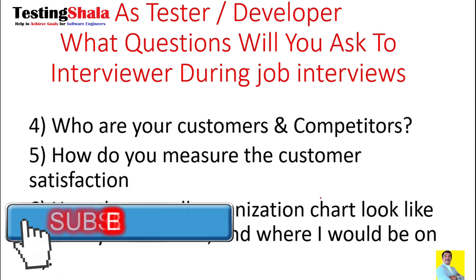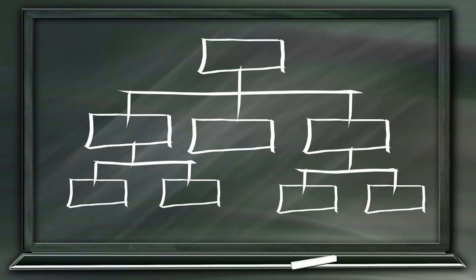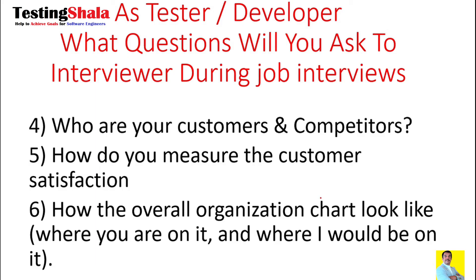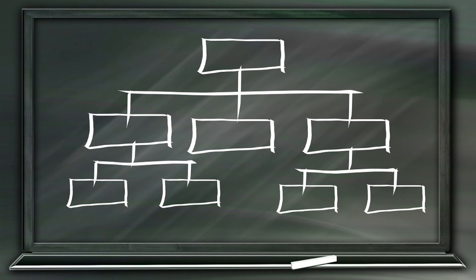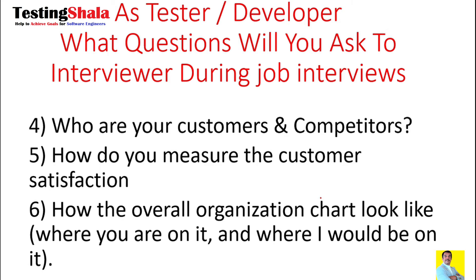The sixth question you can definitely ask is: what is the overall organization chart? This means how are the roles, responsibilities, and hierarchy structured in that organization. You can also ask where you would fit in that organization chart if you were to join the company.